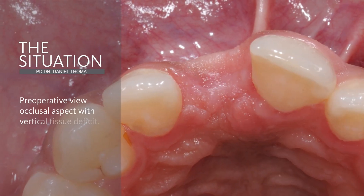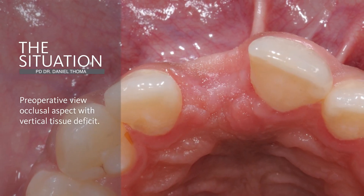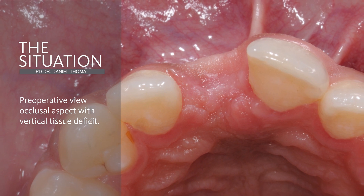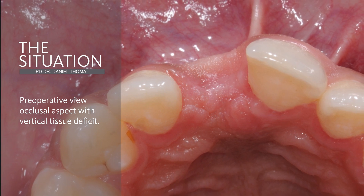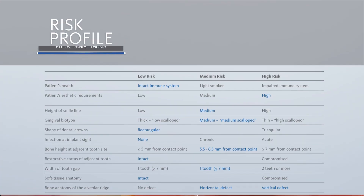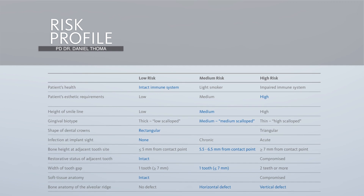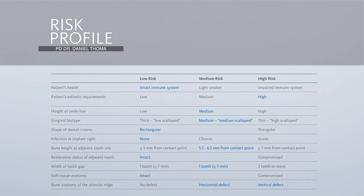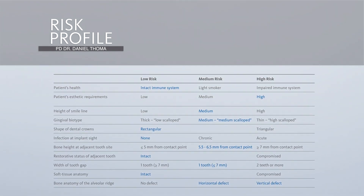Upon clinical examination, severe horizontal and vertical contour deficiencies are present and a decision was made to perform a soft tissue grafting procedure. The risk profile illustrates that the patient is healthy. He has high aesthetic requirements, a medium-high smile line, and a medium or medium scalloped gingival biotype. Looking at the teeth, they are rectangular and there is no infection at the implant site.